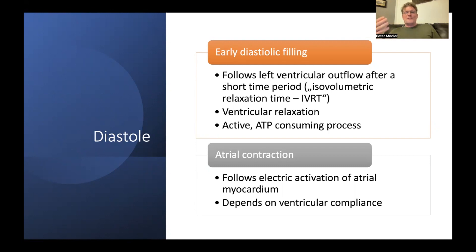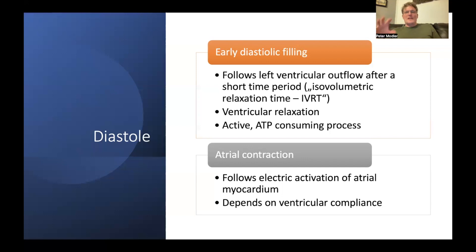The second part of diastole follows the P wave on the ECG — that is, following electric activation of the atria — and is atrial contraction. Once the atrium contracts, it pushes a certain amount of blood into the ventricle. This second diastolic phase depends largely on the volume of blood and ventricular compliance.